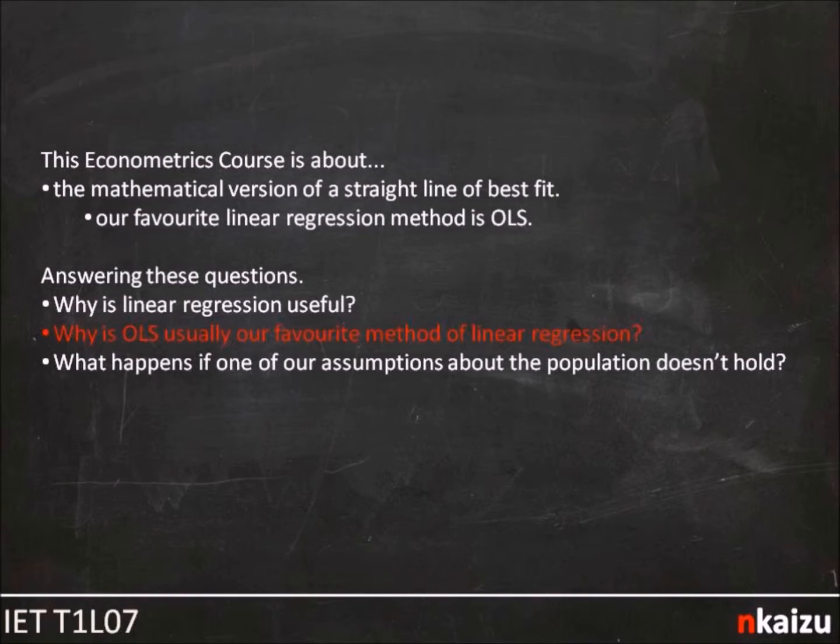We are now on to lecture 7 of Kaizu's introduction to econometrics theory course. First, let's start with the big picture. Econometrics is about linear regression, and in particular our favorite method of linear regression, our favorite method of finding a straight line of best fit, called ordinary least squares, or OLS for short.